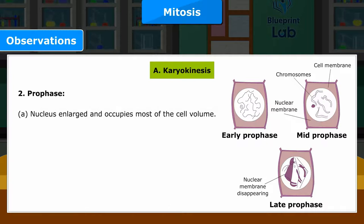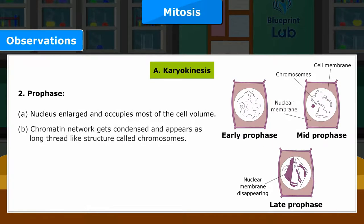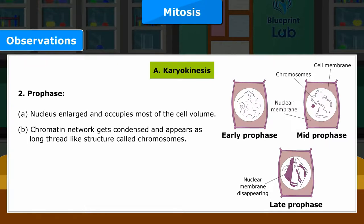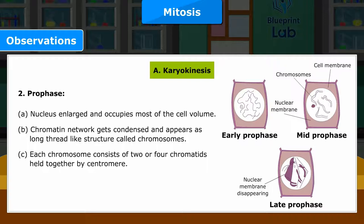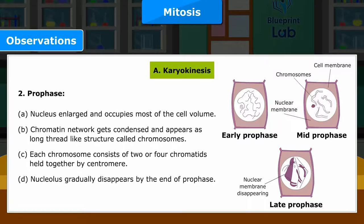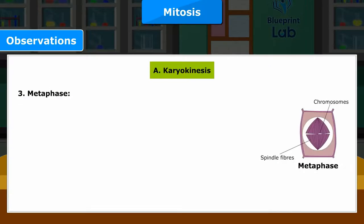2. Prophase: A. Nucleus enlarged and occupies most of the cell volume. B. Chromatin network gets condensed and appears as long thread-like structures called chromosomes. C. Each chromosome consists of two or four chromatids held together by centromere. D. Nucleolus gradually disappears by the end of prophase. E. Nuclear membrane starts disappearing.